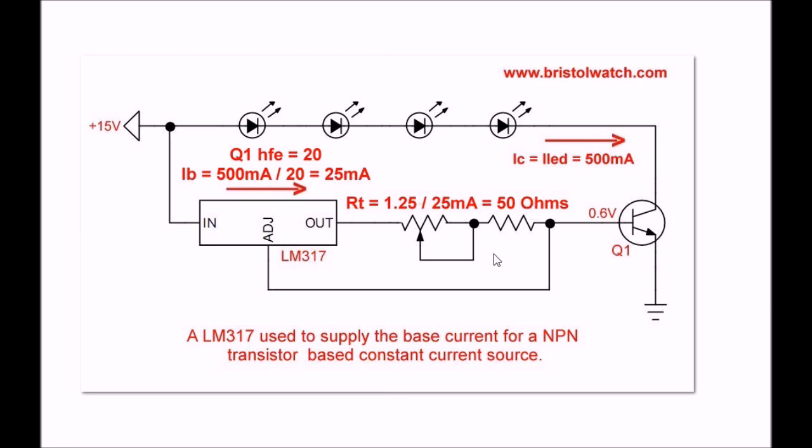Notice the only difference is where Q1 is placed using a PNP transistor. And you notice that the current is derived directly from the source through the LM317 to the base emitter circuit of Q1, the NPN transistor. That's the only difference.